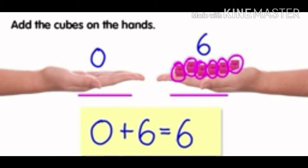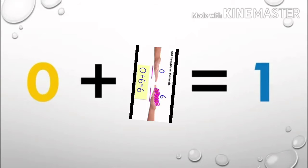Add the cubes on the hands. Look at the first hand — there is no cube. That is why zero. And look at the next hand, there are six cubes. That is why zero plus six is equal to six.